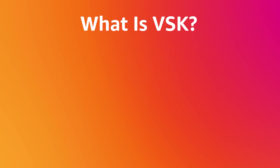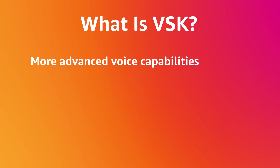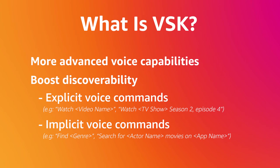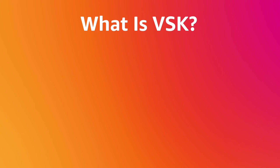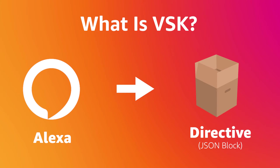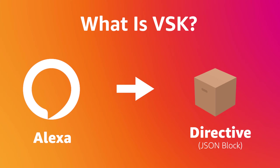Now what exactly is VSK? The Video Skills Kit integrates more advanced voice capabilities into your app, making it easier for customers to discover content and to have more meaningful interactions via voice. This discovery can be in the form of an explicit voice command, such as 'watch video name' or 'watch TV show season 2 episode 4.' The magic of discoverability really kicks in with implicit utterances, such as 'find genre' or 'search for actor name movies on app name.' This is handled by Alexa delivering responses in the form of directives — just blocks of JSON for you to handle in line with the logic of your own application, giving you full control over exactly how those customer requests are handled.